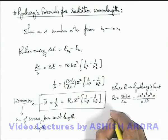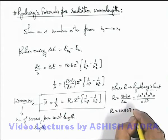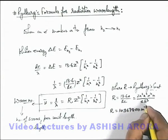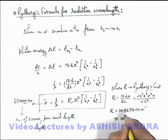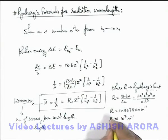And if we calculate the value of R, this comes out to be 1.0967800 × 10⁷ per meter, or it is approximately taken as 10 to the power 7 per meter. This we already discussed in previous sections also.